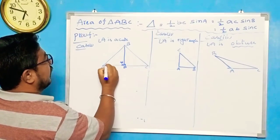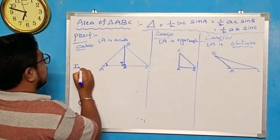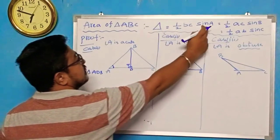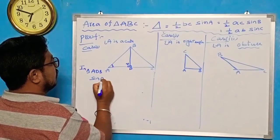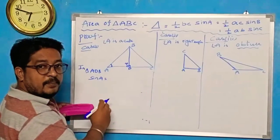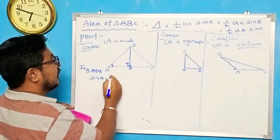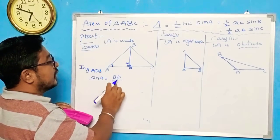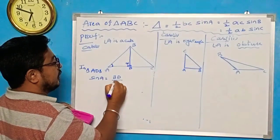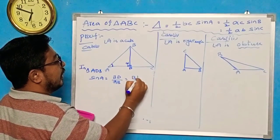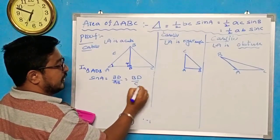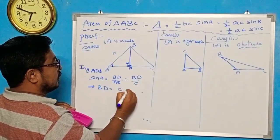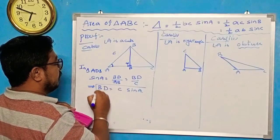In triangle ADB, sin A is equal to opposite side by hypotenuse. The opposite side is BD and the hypotenuse is AB. AB notation is C, so sin A equals BD by C. Therefore BD is equal to C sin A.